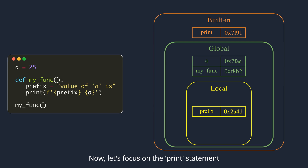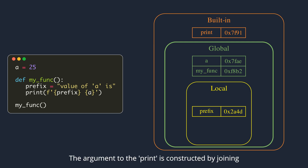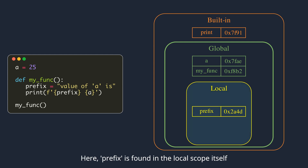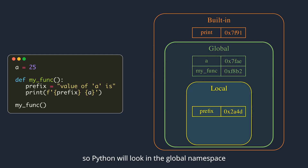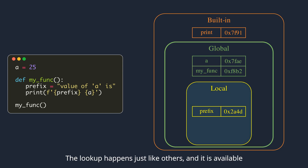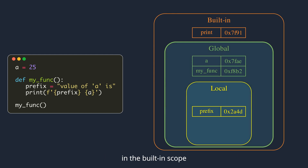Let's focus on the print statement within the function. The argument to print is constructed by joining local variable prefix and global variable a. For name resolution, Python starts from the current scope and looks outward until it finds the first match. Here, prefix is found in the local scope itself. Variable a is not found in the local namespace, so Python will look in the global namespace, and it is available there. Next is the print function — lookup happens just like others, and it is available in the built-in scope.